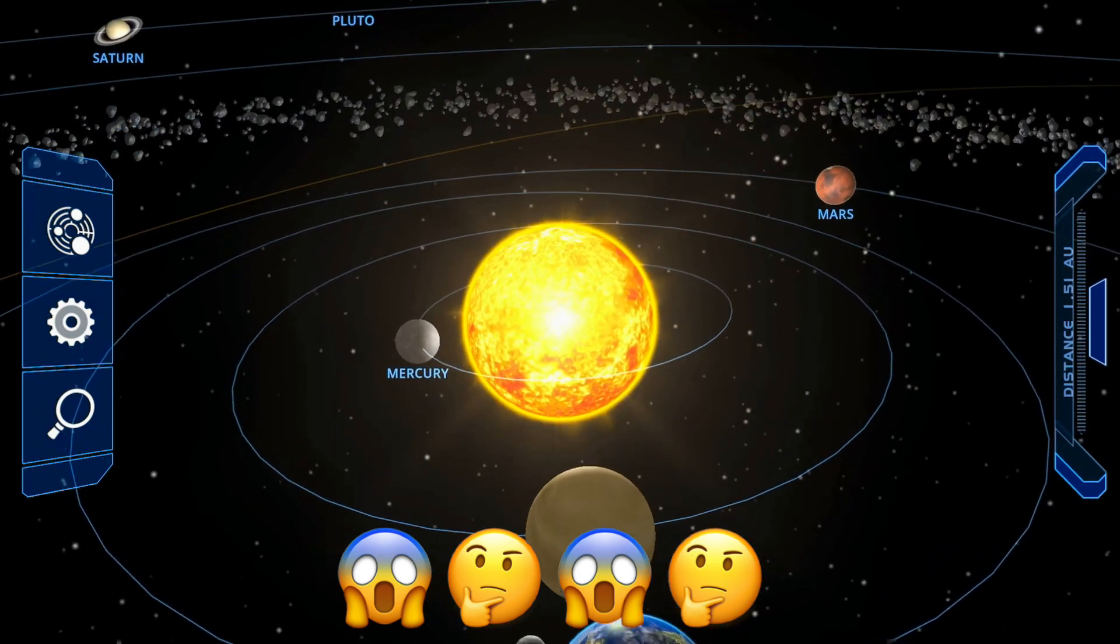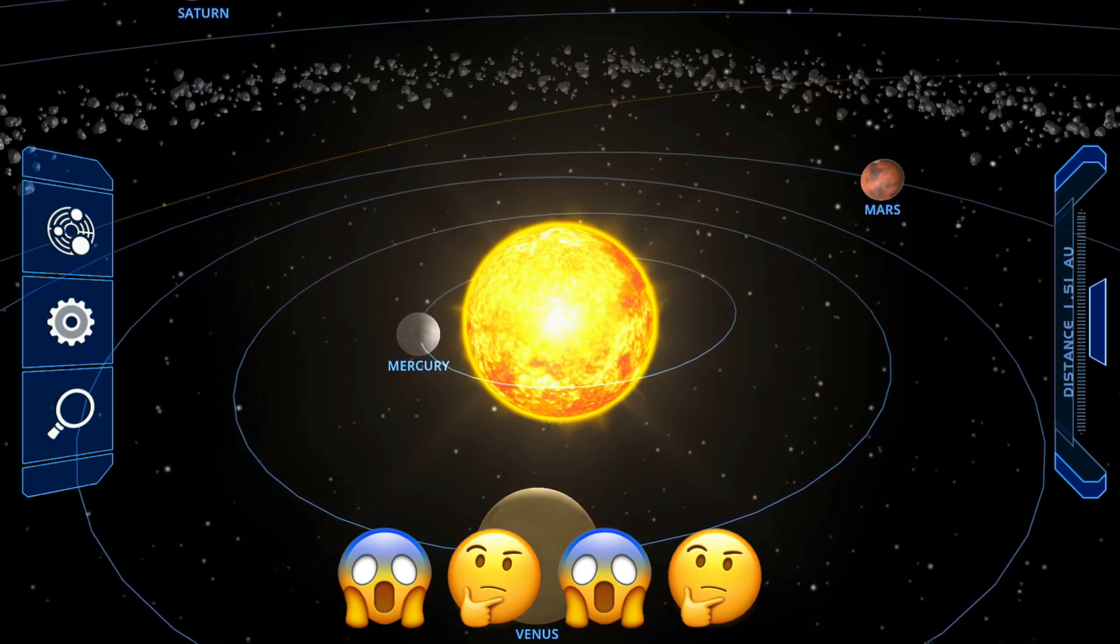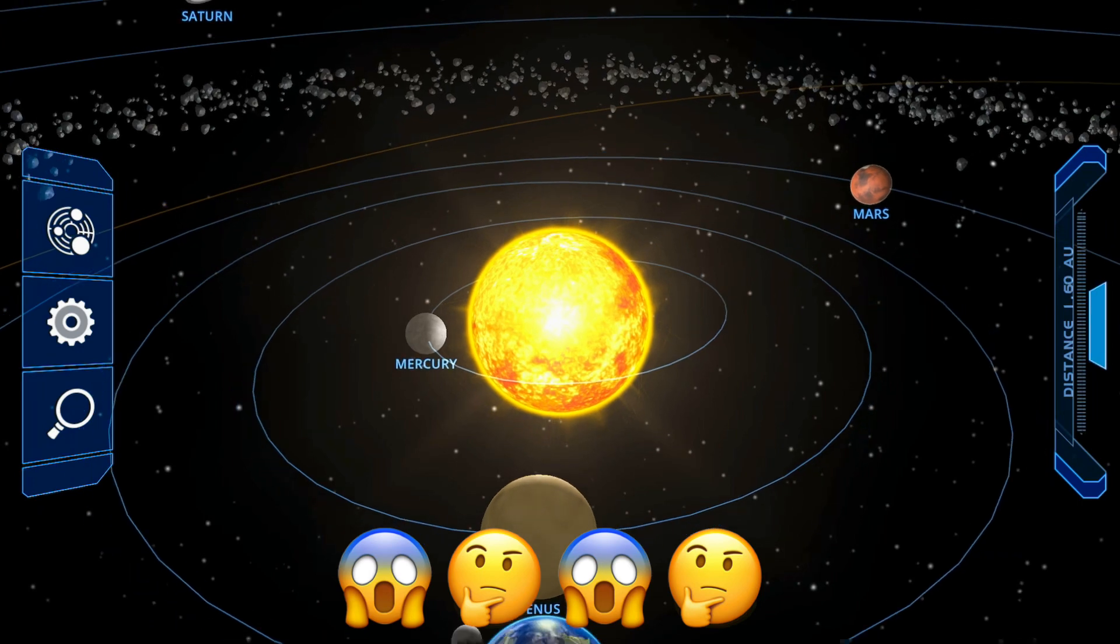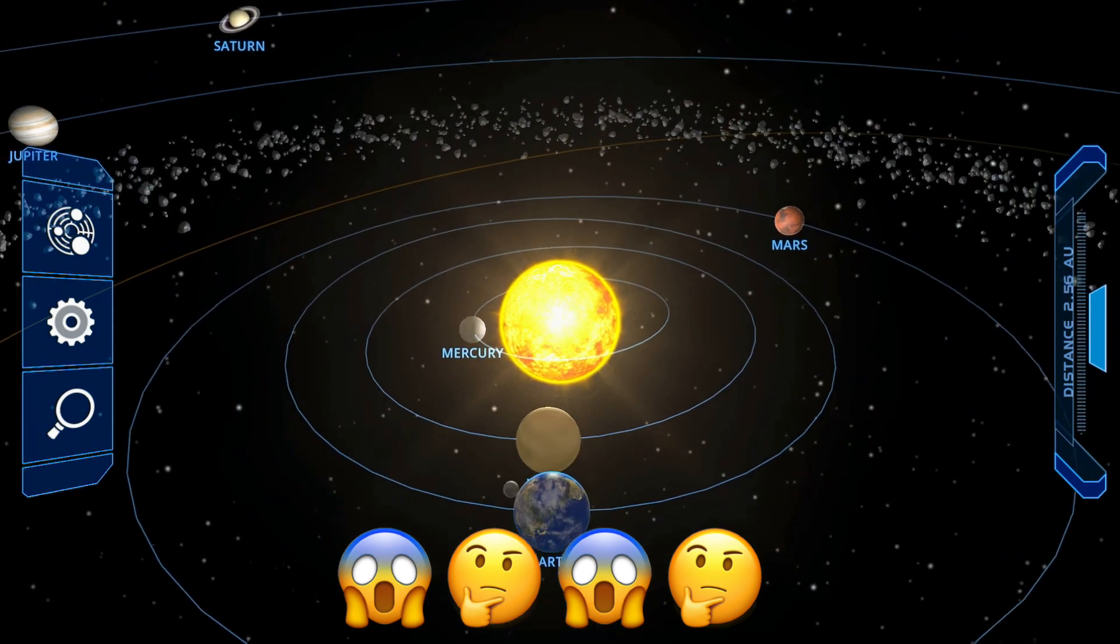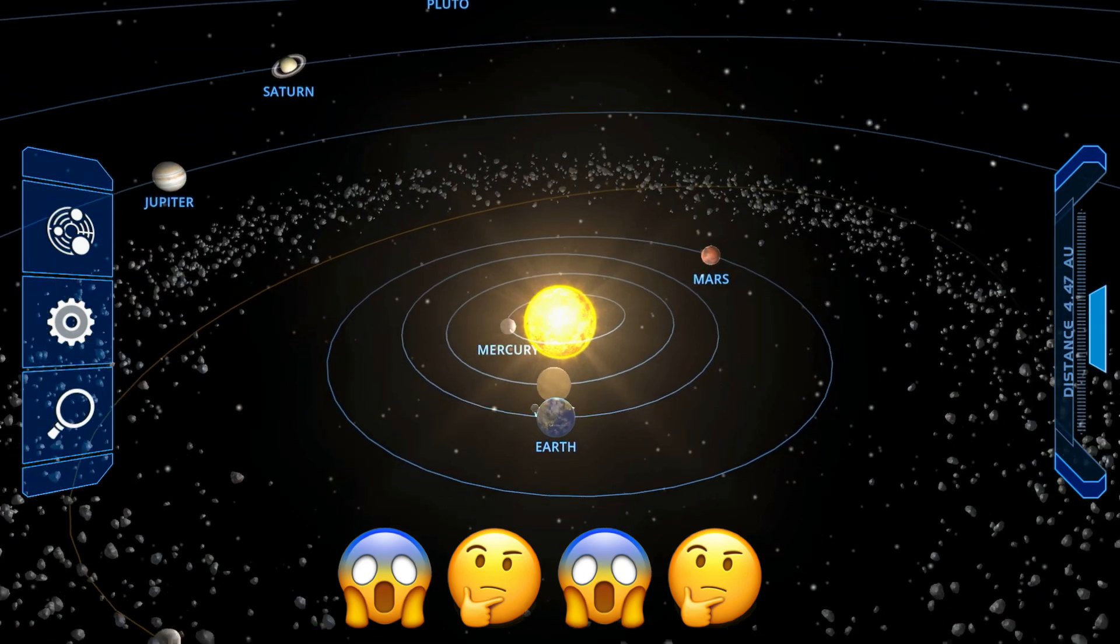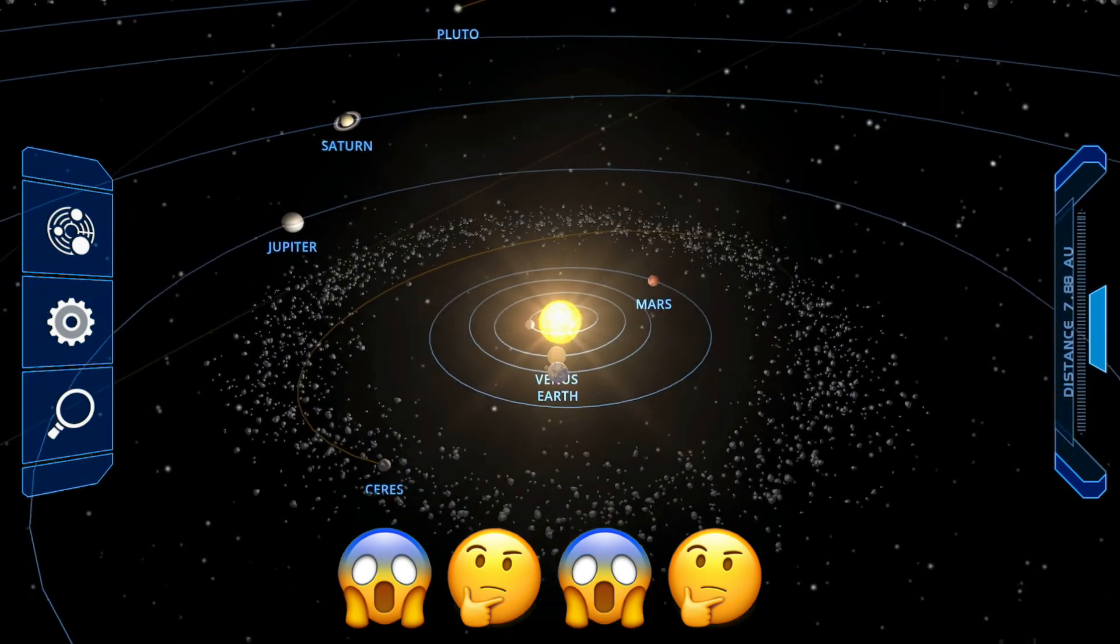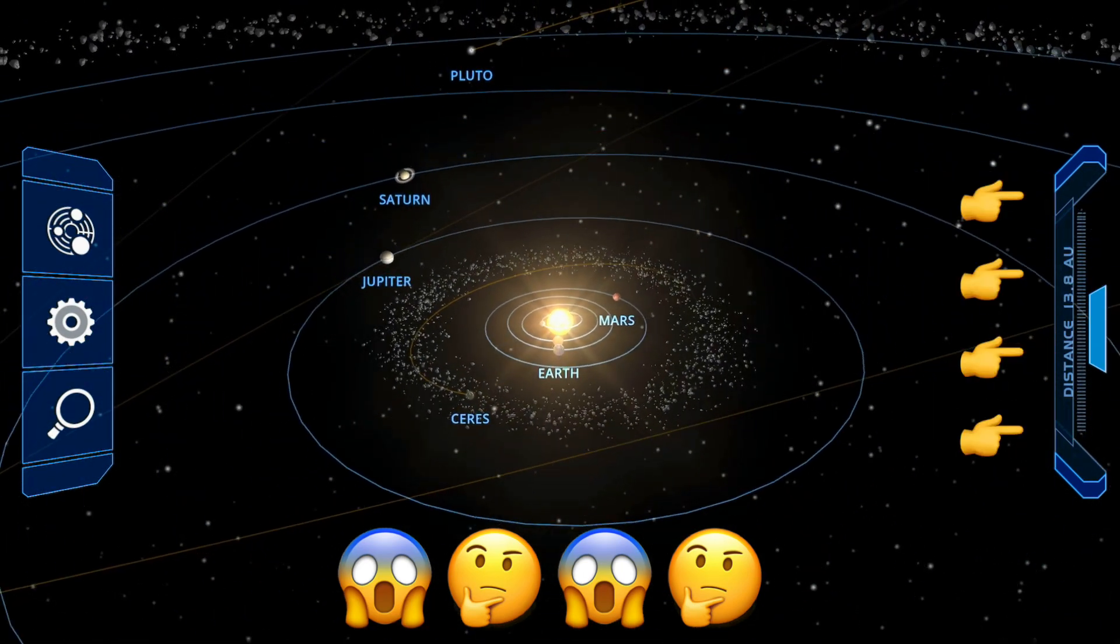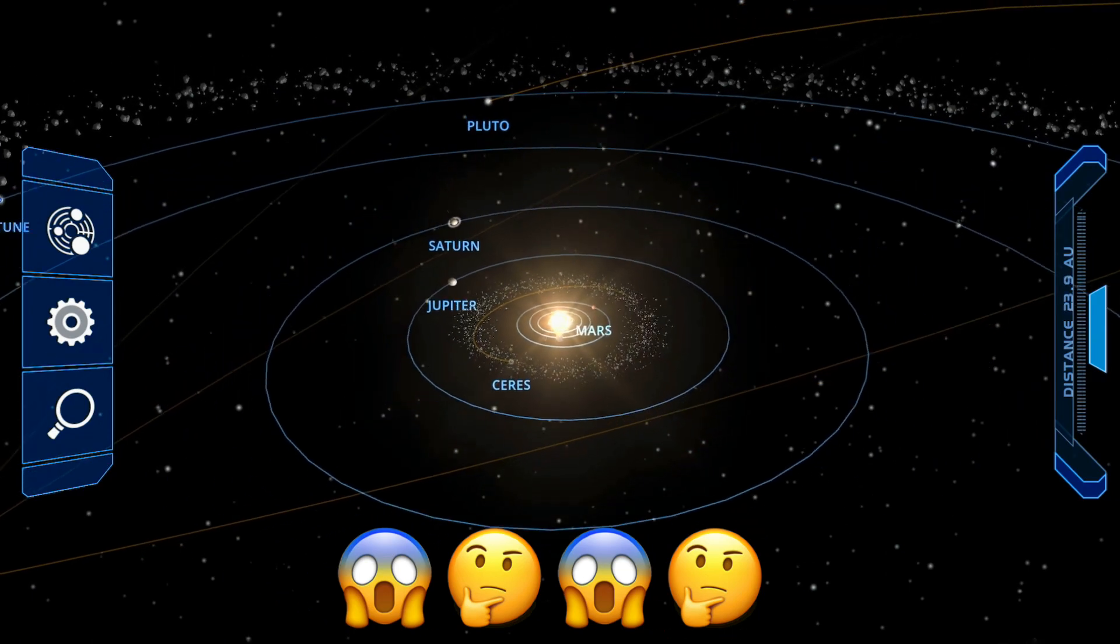Before this clip, I want to clarify one thing. We measure this distance in AU - AU means astronomical unit, shown on the right side. One AU is equal to 14 crore 95 lakh 97 thousand 871 kilometers.